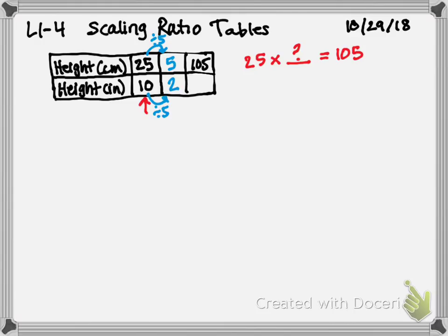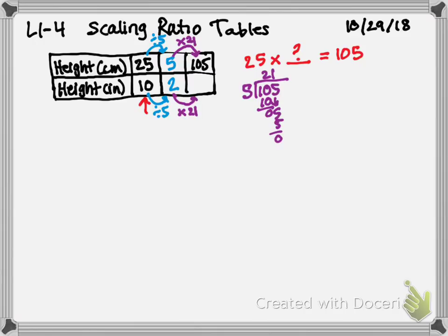That's going to be our new plan — figure out how to get from 5 to 105. Since that's not a math fact I've memorized, but I do know 5 goes into that number, I can do long division. 5 goes into 10 twice evenly with no remainder. Bring down the 5, and 5 goes into itself once with no remainder. So if I multiply 5 by 21, I get 105, which means if I multiply 2 by 21, I'm treating both numbers the same, and I get 2 times 21 is 42.